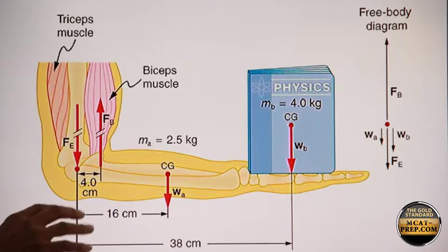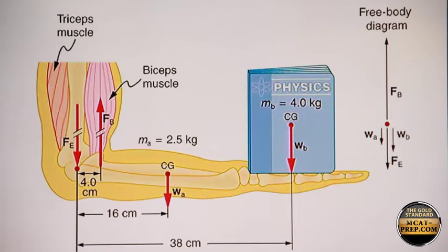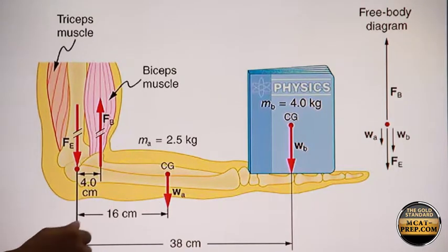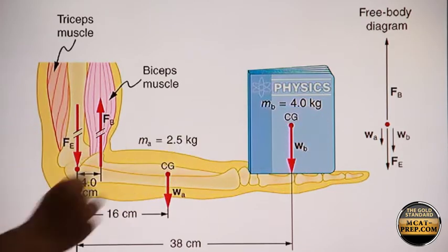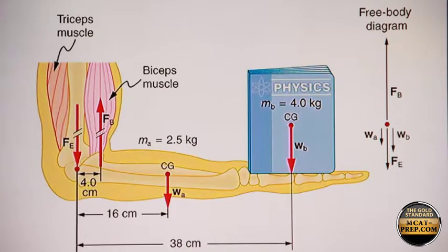So we have our different forces. To summarize this, to remove all this and summarize it, a free body diagram can be produced. In the free body diagram, which summarizes what's going on, we have what's going down: the weight of the arm, the weight of the book, and the downward force from the upper arm at the elbow joint.